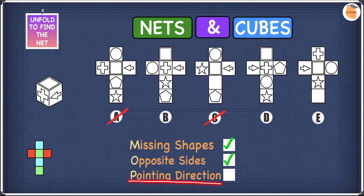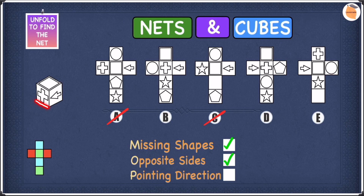Now let's move on to pointing directions to find our answer. If you have a look at the cube, you may notice that the arrow is pointing towards the plus sign. So if we find a net in which the arrow is pointing somewhere else, we cross it off, because the arrow must point towards the plus sign. In B, the arrow is pointing towards the plus sign, so B is fine. In D, the arrow is once again pointing towards the plus sign, so D is also fine.